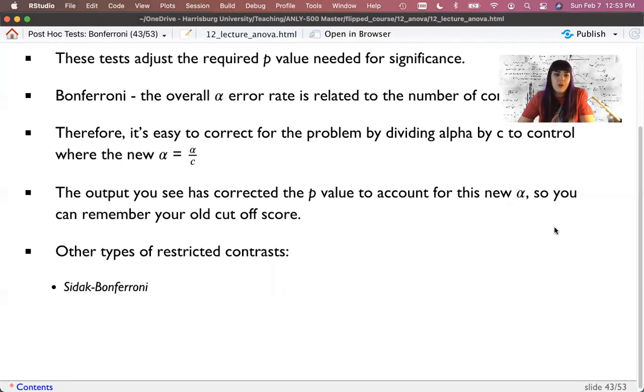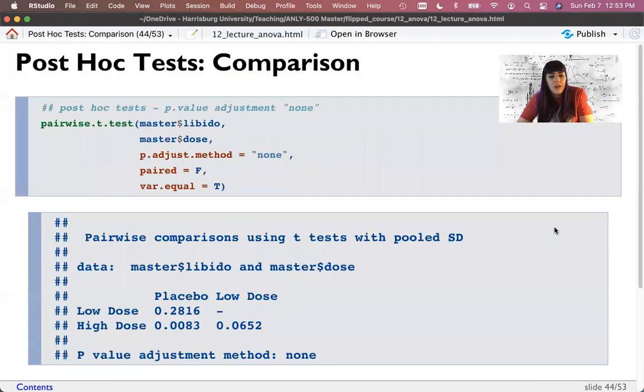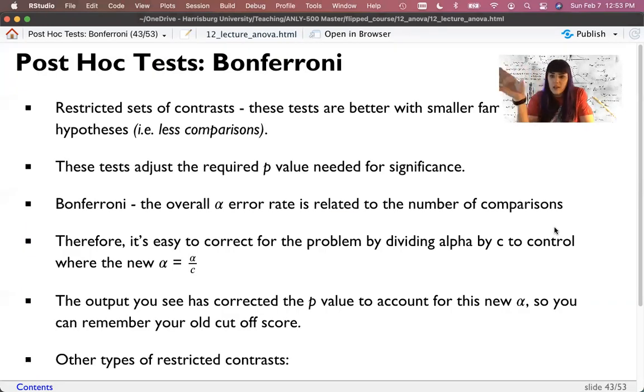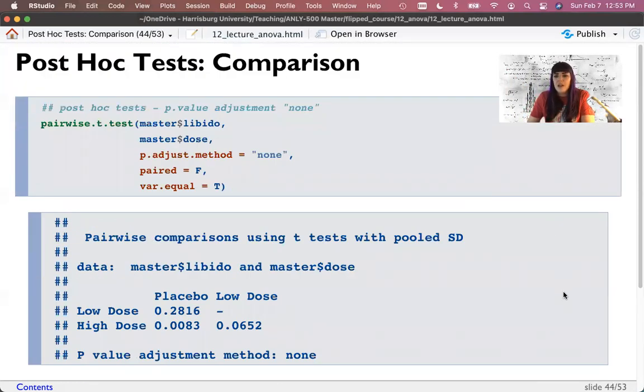If I have three comparisons, my new alpha would be 0.017, 0.05 divided by three. Now, again, I'm just going to let the computer do this fixing rather than me. And so the output that we're going to see using R here is corrected for that idea of a new alpha. So you can just keep regular alpha in your head. Some other comparisons that we could use is the Sidak Bonferroni, which is a slightly different alpha correction. The Holm test, which is a variation on the theme for Bonferroni. Dunnett's test, which is only useful if you have control groups. And then there are even more. There are entire novellas on post-hoc tests alone.